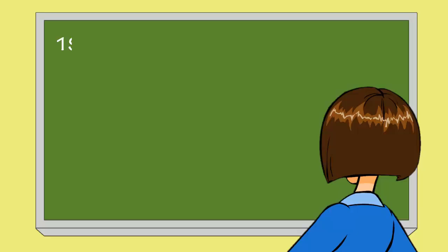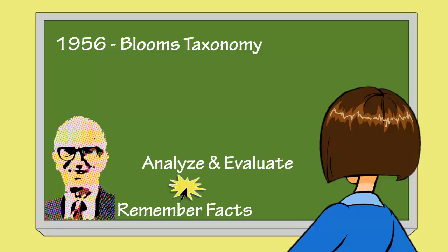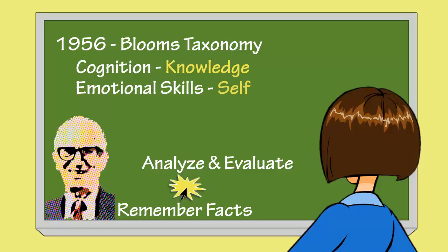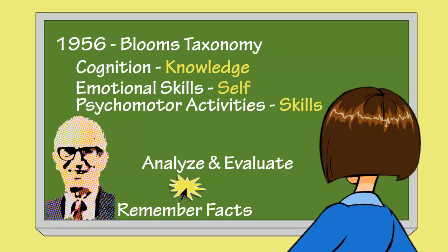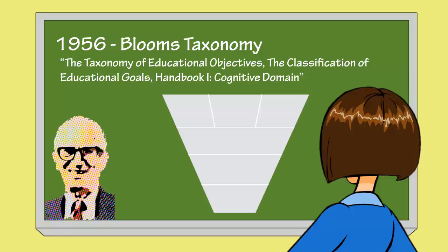In 1956, a taxonomy known as Bloom's Taxonomy was created by educational psychologist Dr. Benjamin Bloom and others. Their goal was to promote higher forms of thinking in education, such as getting students to analyze and evaluate rather than just remember facts. The taxonomy they developed looked at levels of cognition or knowledge, emotional skills or self, and psychomotor activities or skills. The product of Bloom's work became known as the Taxonomy of Educational Objectives, the Classification of Educational Goals, Handbook 1, Cognitive Domain. This handbook has been translated into many languages, used in many contexts, and has had a significant influence on education. Others have modified the early work of Bloom's Taxonomy to account for new knowledge and new struggles that educators have encountered.